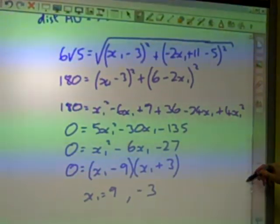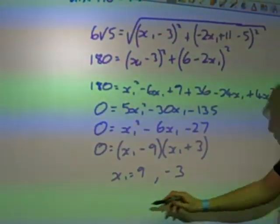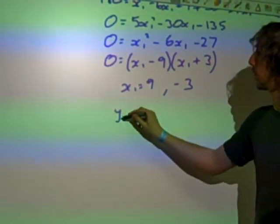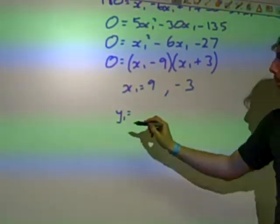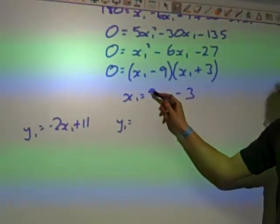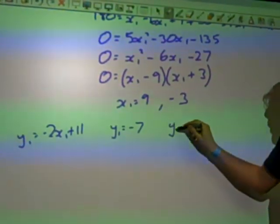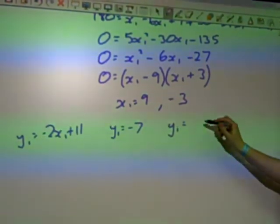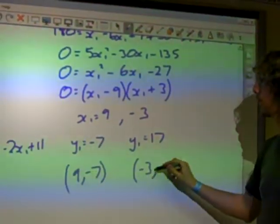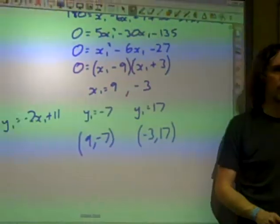And somewhere we've got the y value of the coordinates of B as well. It was minus 2x₁ plus 11. So minus 2 times 9, that's negative 18 plus 11 is minus 7. And 6 plus 11 would be 17, we get (9, minus 7) and (minus 3, 17), I think. Have I done that right at the end? I think so. So we get that.